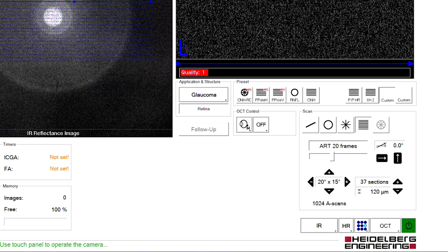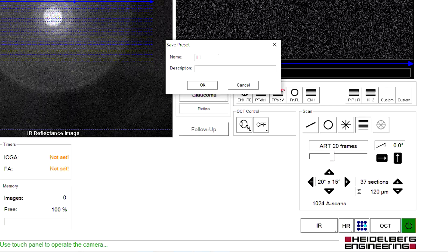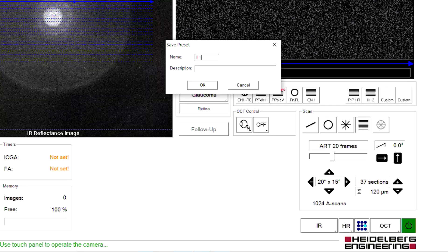You can then add a customised label, in this case we've used IIH1, and save this for quick access in the future.